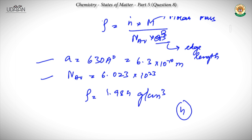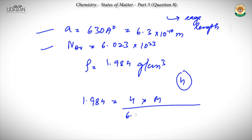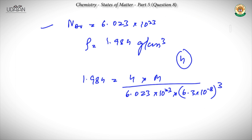The effective number of atoms is 4. Using the edge length of 630 angstrom converted to 6.3 into 10 to the power minus 8 cm (whole cube), and solving the density equation, our value for molar mass comes out to be 74.7 gram per mole.